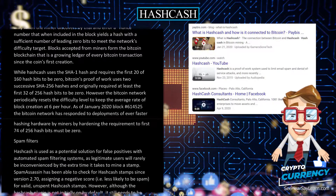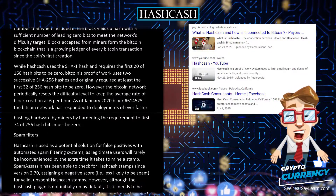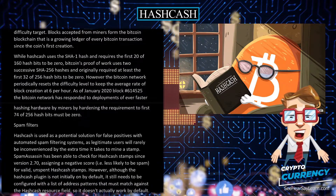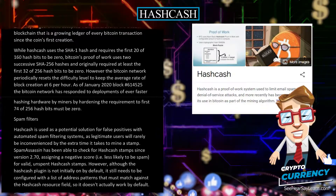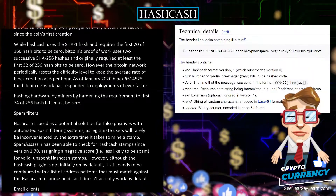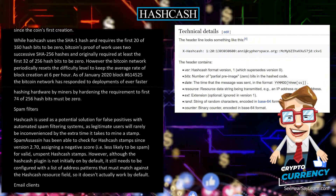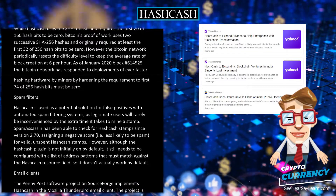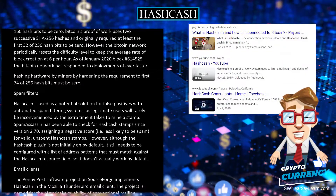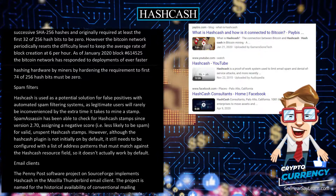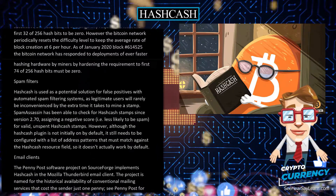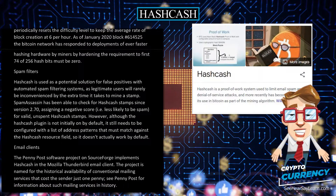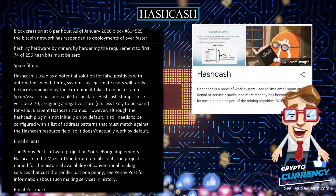Spam filters. Hashcash is used as a potential solution for false positives with automated spam filtering systems, as legitimate users will rarely be inconvenienced by the extra time it takes to mine a stamp. SpamAssassin has been able to check for hashcash stamps since version 2.70, assigning a negative score, i.e. less likely to be spam, for valid, unspent hashcash stamps. However, although the hashcash plugin is not initially on by default, it still needs to be configured with a list of address patterns that must match against the hashcash resource field, so it doesn't actually work by default.